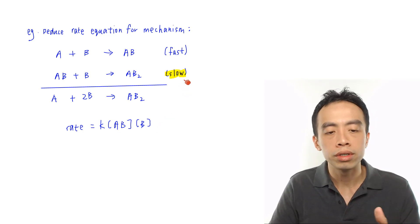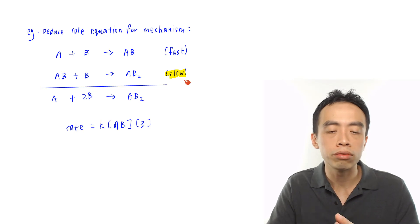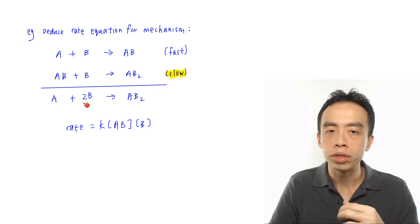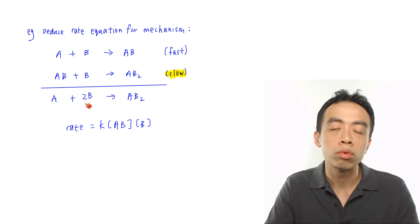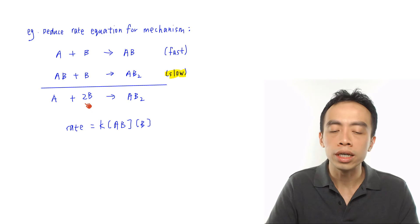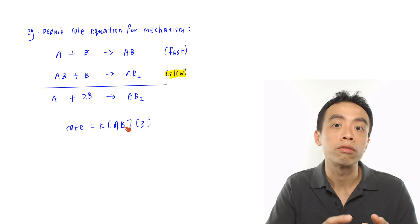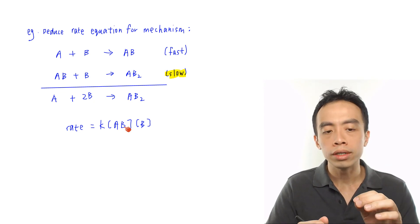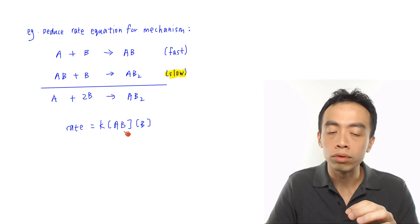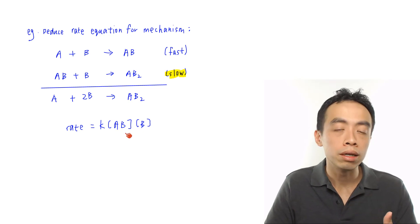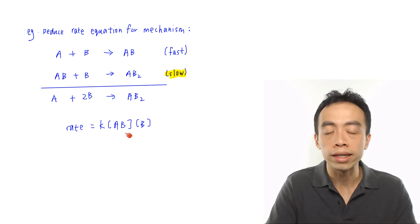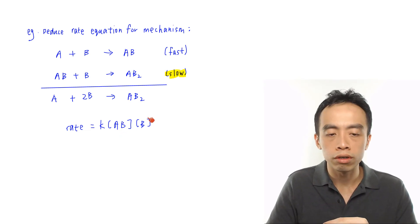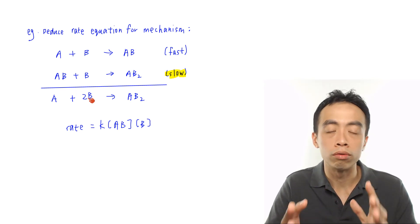But we notice something interesting. If I look at the terms inside this rate equation, we have AB, which doesn't appear as a reactant because it is an intermediate. When we write out the rate equation, we don't write it in terms of intermediates. We only write it in terms of reactants or sometimes catalysts involved in the reaction. So in this case, I have to do something about AB — I need to modify it in terms of the reactant or catalyst that forms AB. The concentration of B I can keep because B is a reactant.